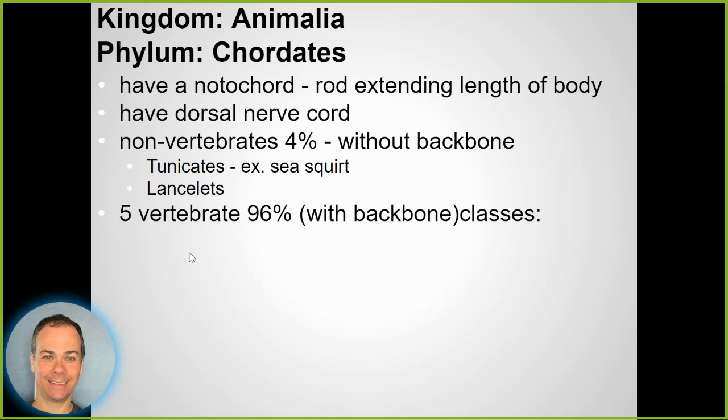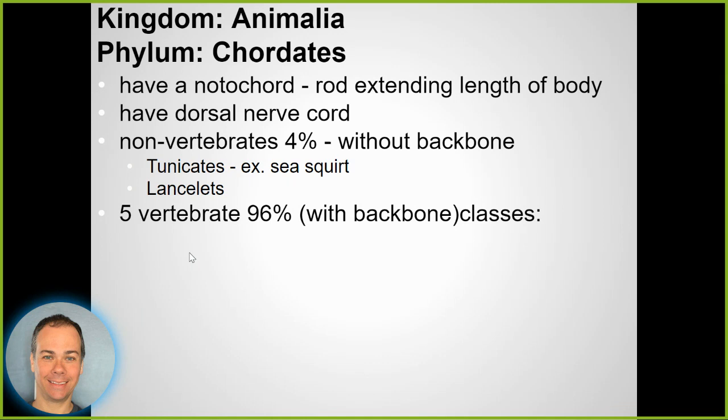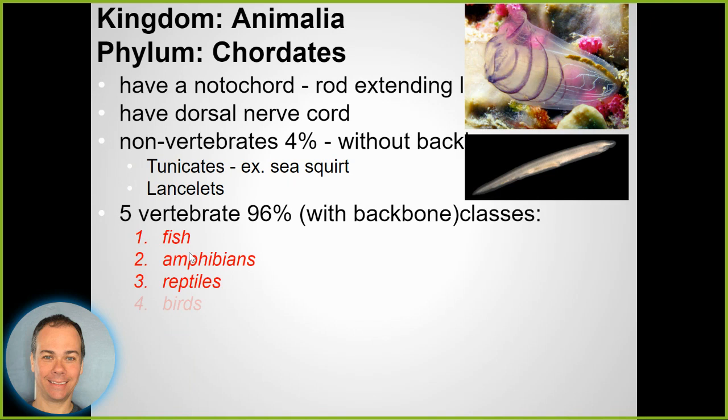The final group are the chordates - this is where we belong. These are vertebrates with a dorsal nerve cord, a spinal cord. They include fish, amphibians, reptiles, birds, and mammals - the main groups of vertebrates we're probably familiar with.